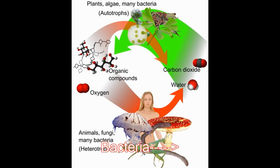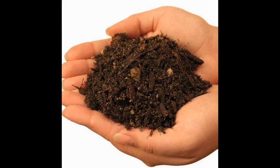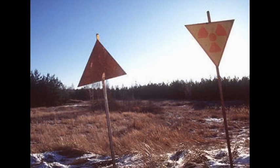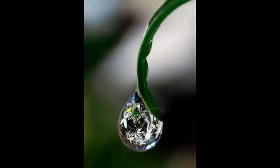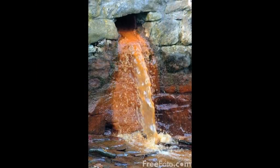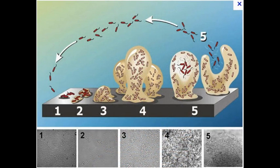Bacteria are present in most habitats on Earth, growing in soil, acid hot springs, radioactive waste, water, and deep in the Earth's crust, as well as in organic matter, whether plants or animals, alive or dead.